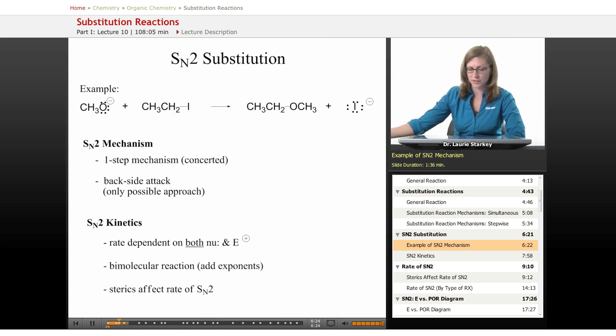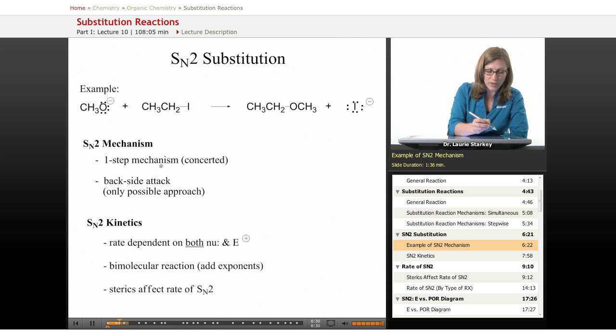We'll start with the SN2 mechanism. Here's an example of such a mechanism. We said this is the one step mechanism. What does it look like? We could show arrows to follow the electron path, the electron movement and the bonding. This group that is coming in and doing the substituting we describe as a nucleophile. Here again, we have something with a lone pair and a negative charge.